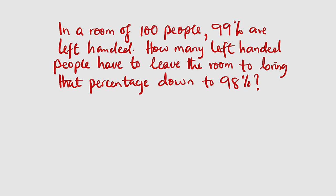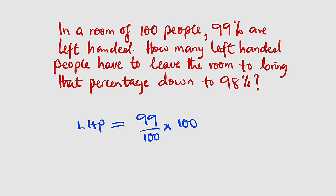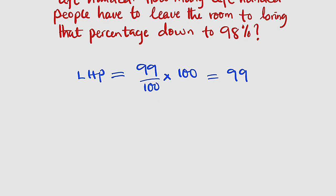Let's get started. First, I would like to determine the number of left-handed people in that room. Left-handed people equal 99 percent of the total number of people, which is 100. So there are 99 left-handed people initially. This means that out of 100 people in the room, 99 are left-handed.